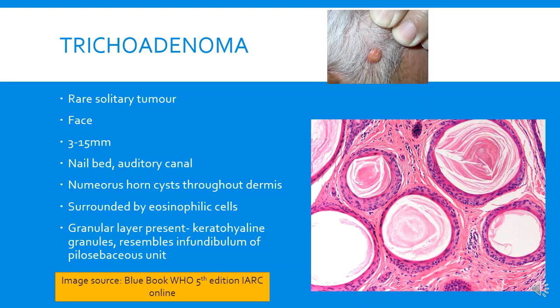Trichoadenoma is a rare solitary tumor occurring on the face, more common in the elderly, and very rarely in the nail bed or auditory canal. It is intermediate between trichofolliculoma and trichoepithelioma. Instead of a single horn cyst like trichofolliculoma, there are numerous horn cysts throughout the dermis, surrounded by eosinophilic cells. The granular layer may be present with keratohyalin granules, indicating differentiation towards the infundibular part of the hair follicle, which is similar to epidermis.